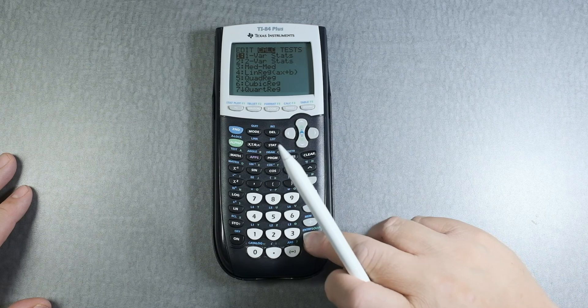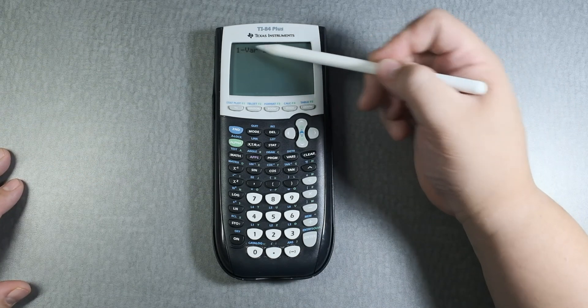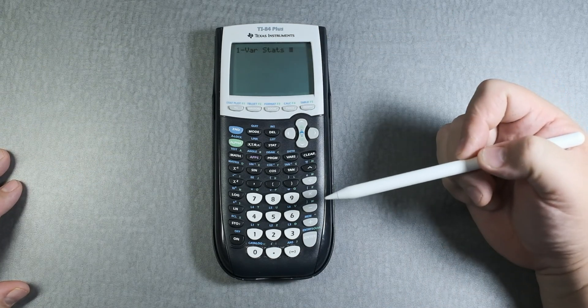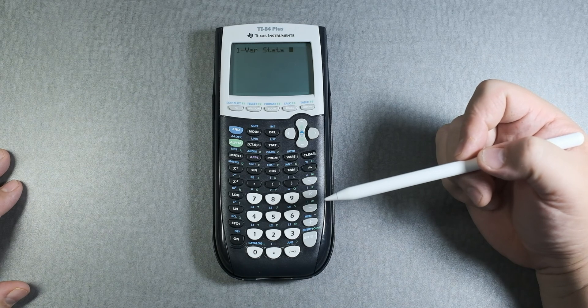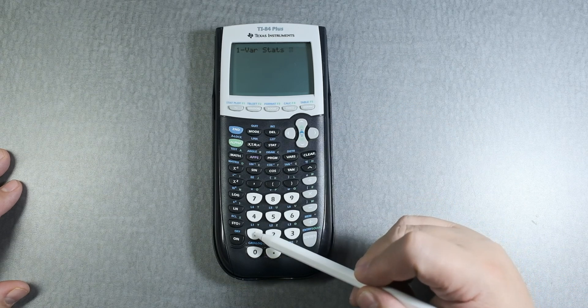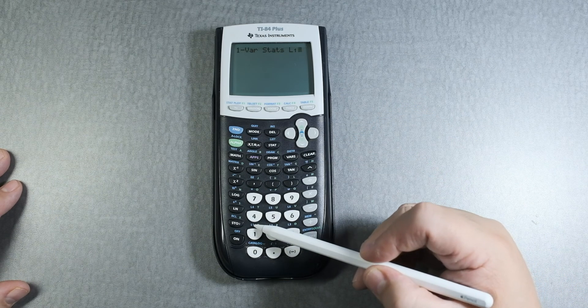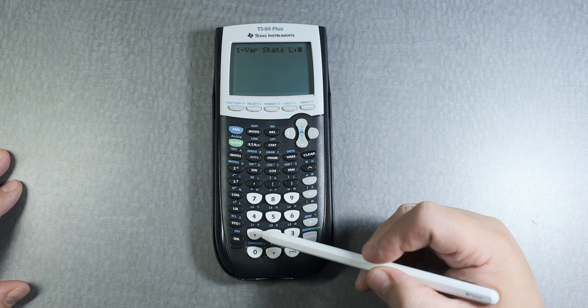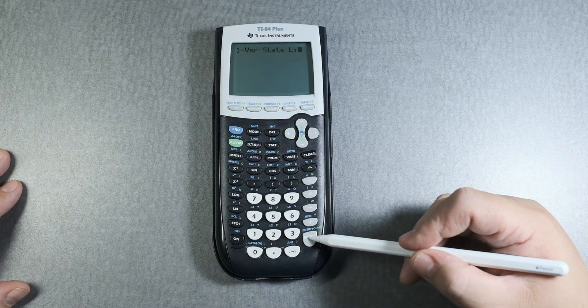We're going to press enter or one. You can see it says, hey, what list do you want to follow? Well, we're going to click on second, one, right? The second means the blue. So above this key, one gives you L1. Press enter.